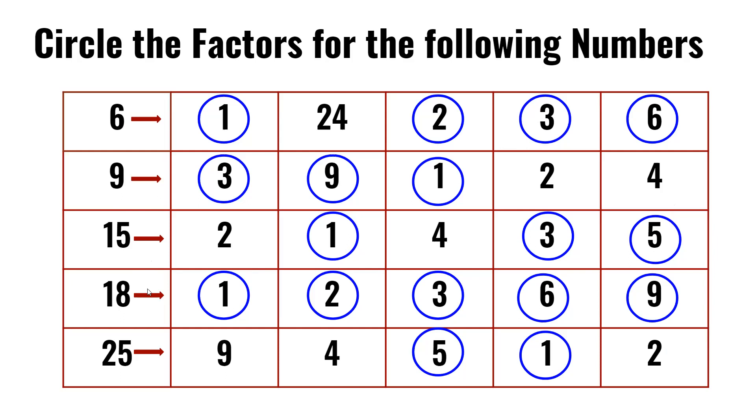In the fourth row, we have to find the factors of 18. The given numbers are 1, 2, 3, 6, and 9. We all know 1 times 18 is 18, 2 times 9 is 18, 3 times 6 is also 18. So the whole row is circled.